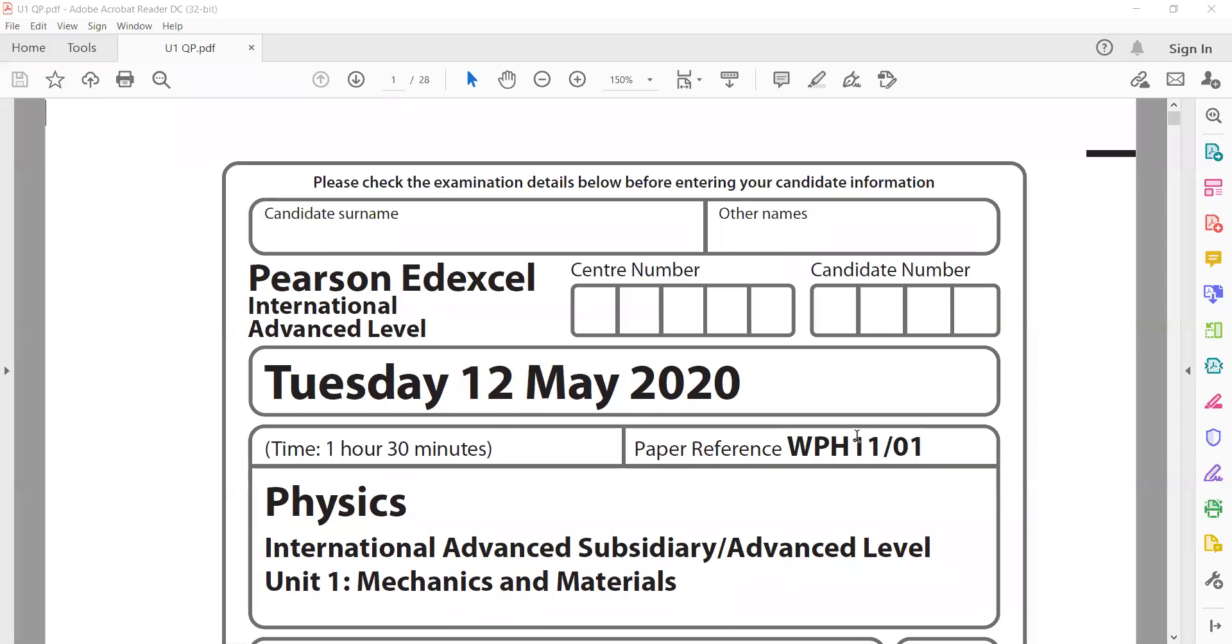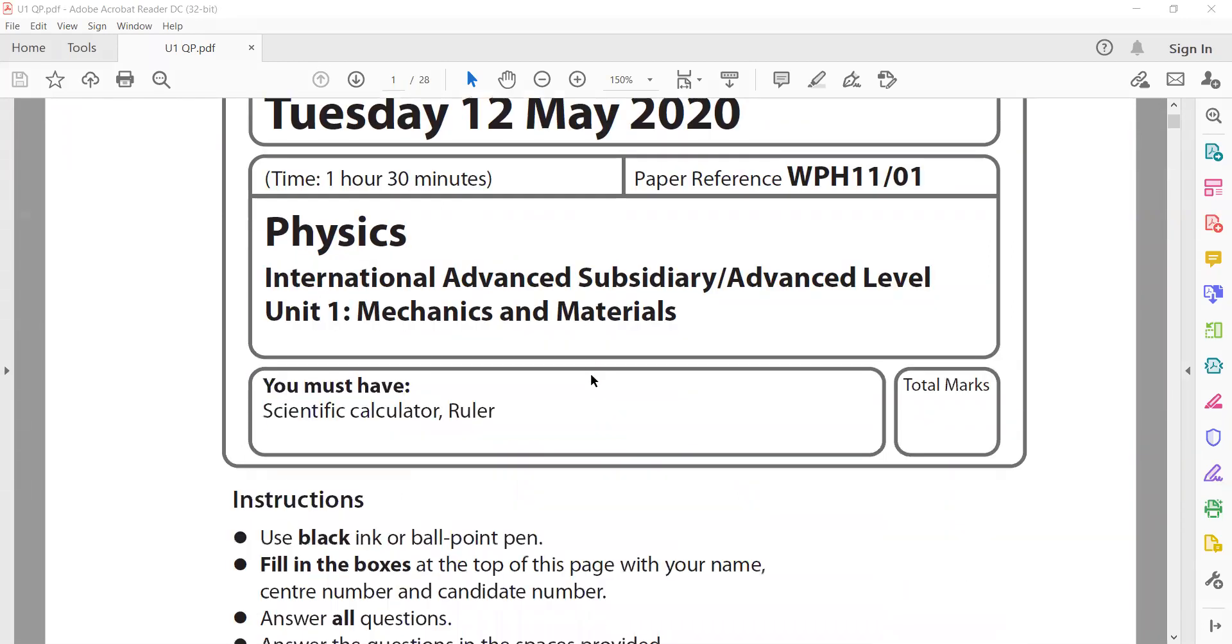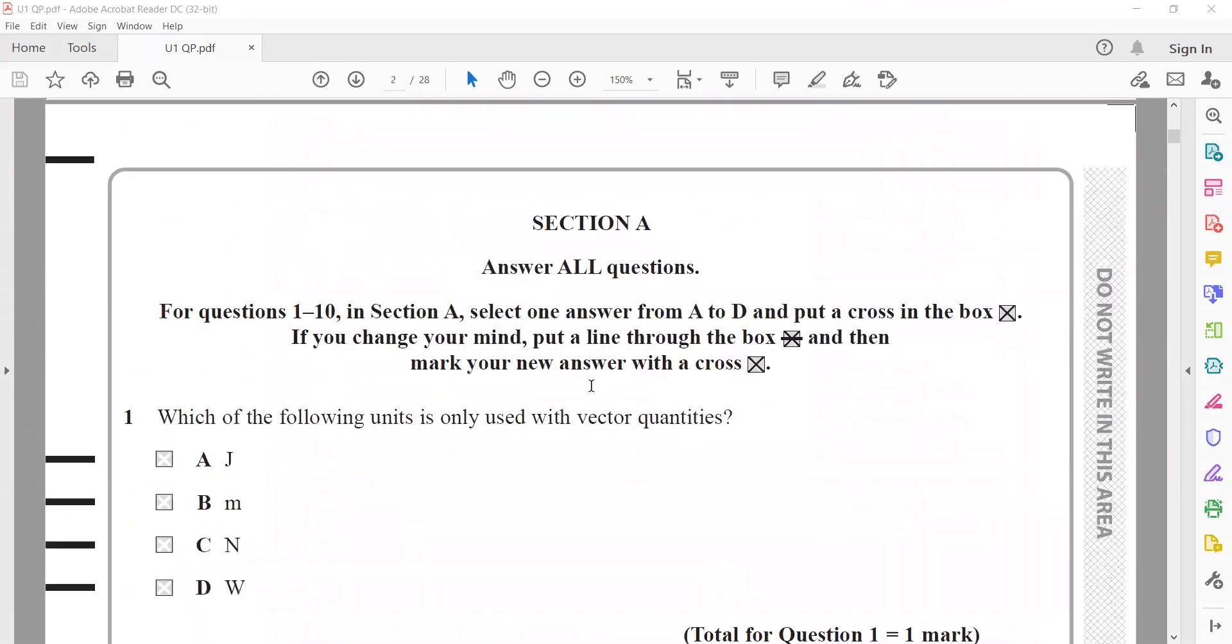Good evening everyone, this is May 2020 unit 1 of IEL physics. This was the same exam conducted in October because the May June exam was switched to October November. In May June it was assessment.